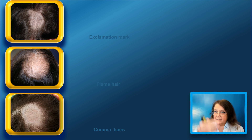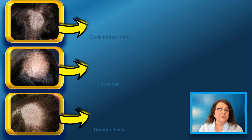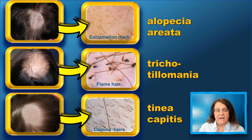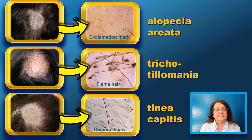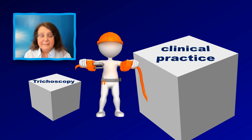I will focus on three of these diseases. These three patients of mine all have focal hair loss that is very similar clinically. However, trichoscopy shows different features. In the first upper image you see exclamation mark hairs, typical for alopecia areata, so we will search for other features of alopecia areata. The second image shows flame hairs, typical of trichotillomania. In the third case, trichoscopy shows comma hairs, and here we will perform mycological culture to investigate tinea capitis.